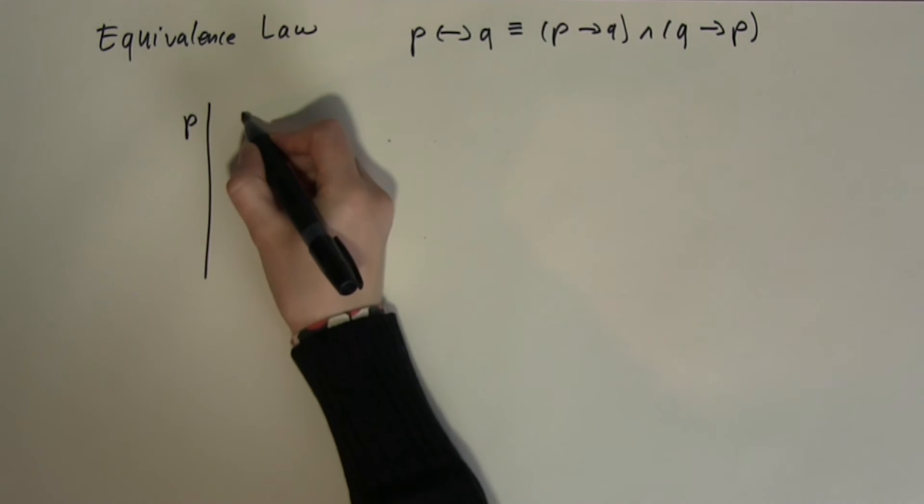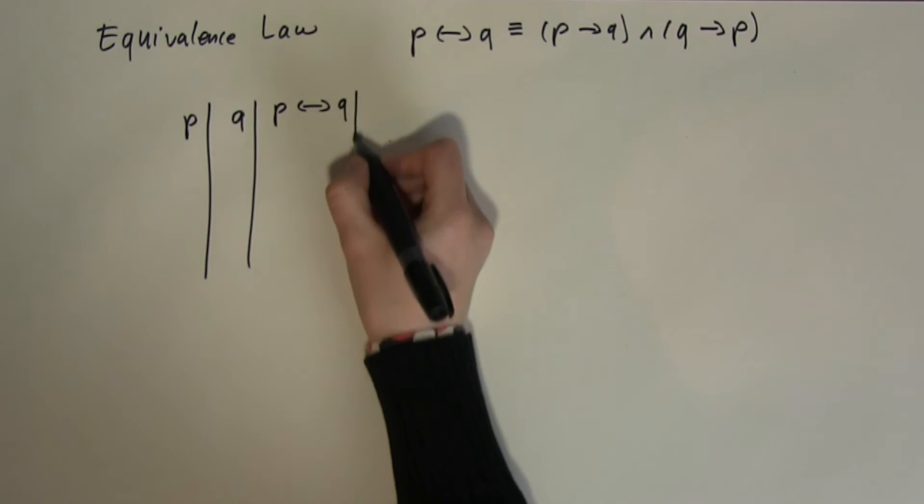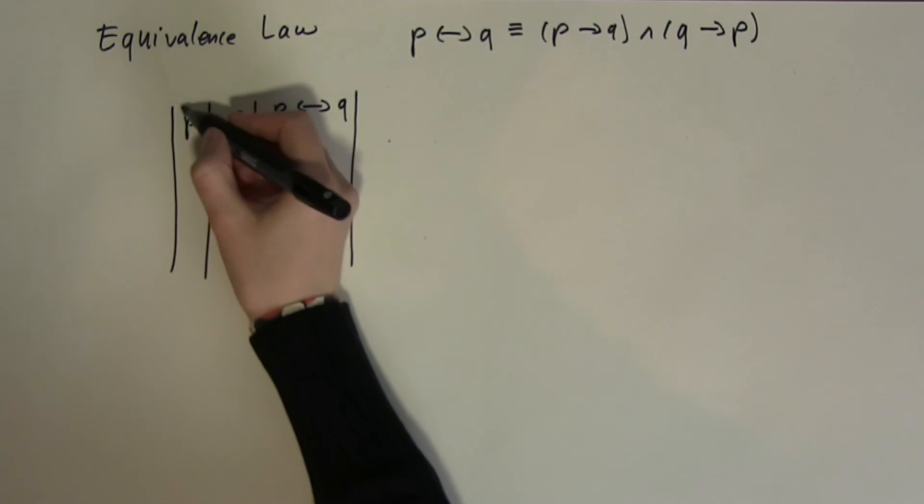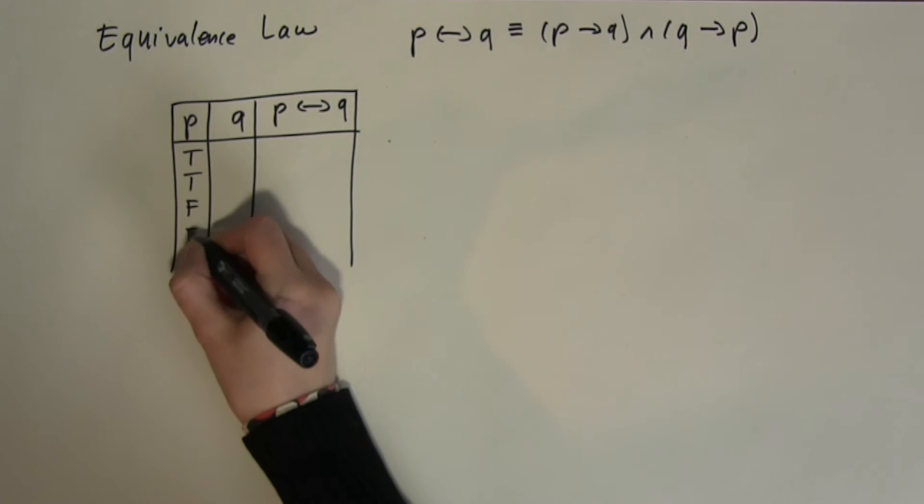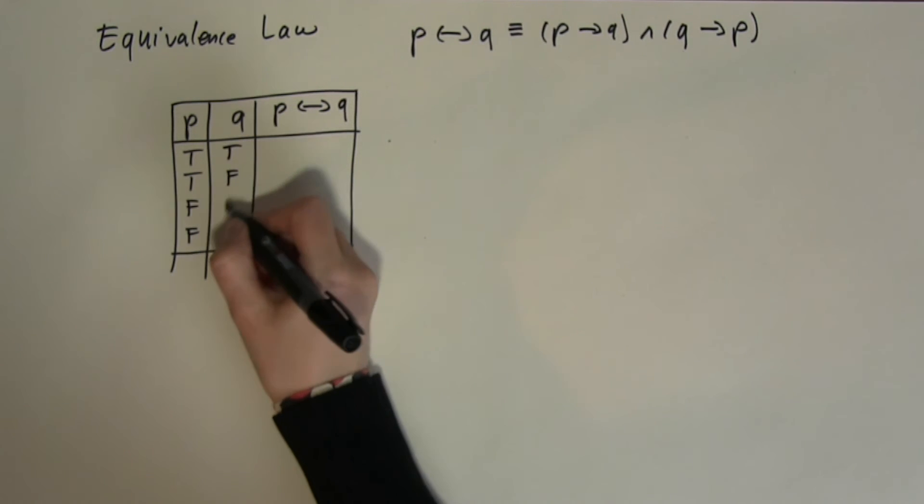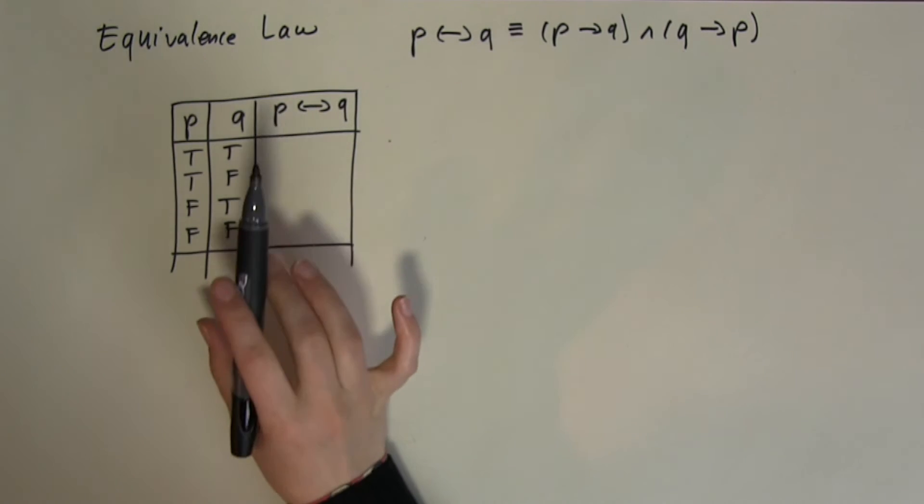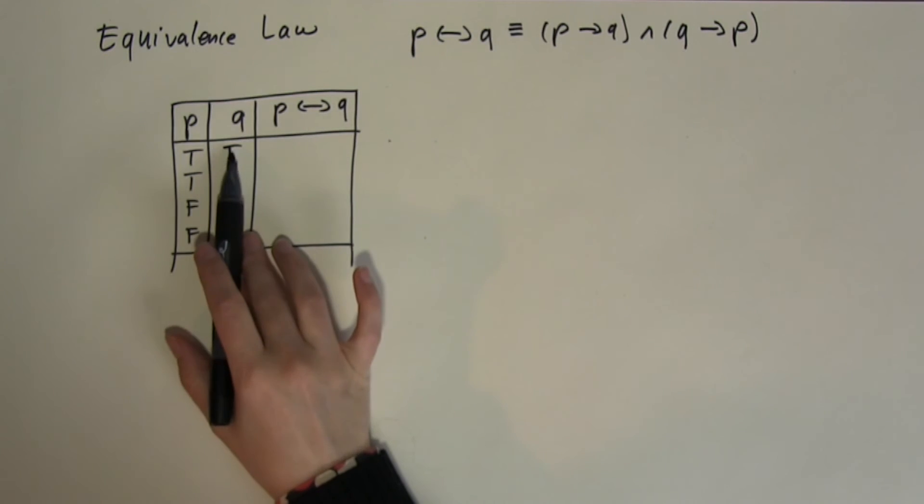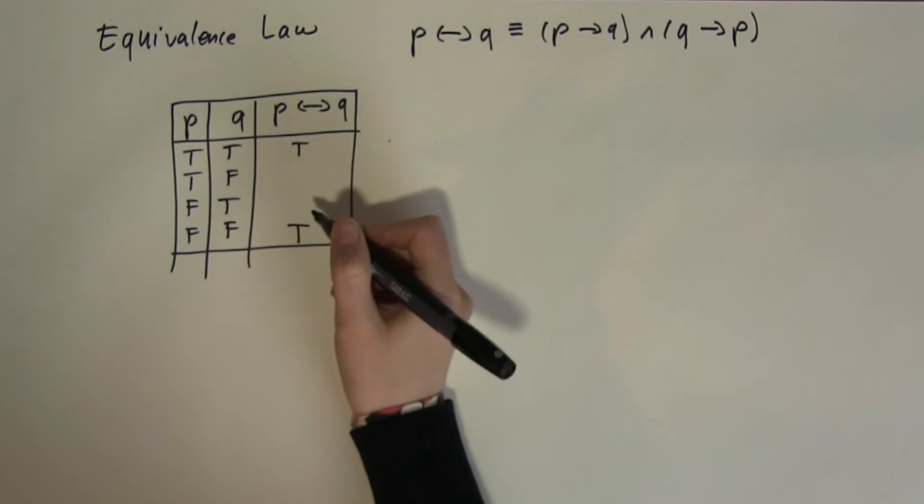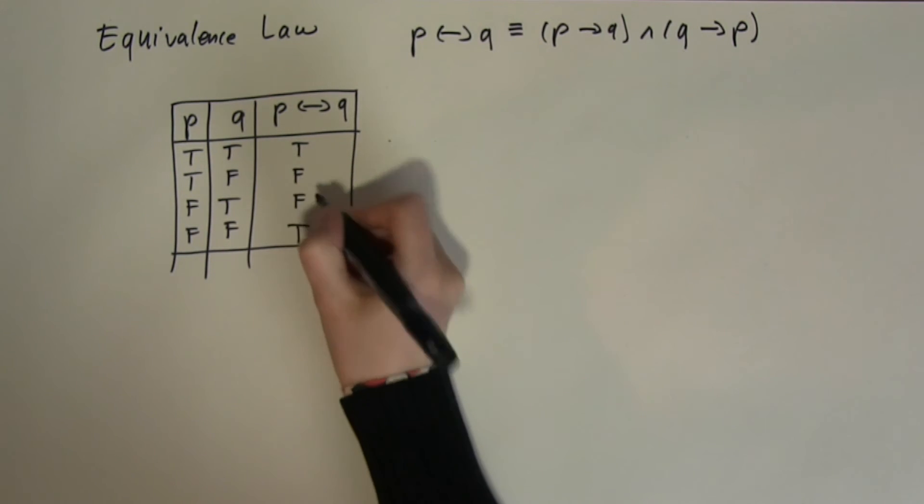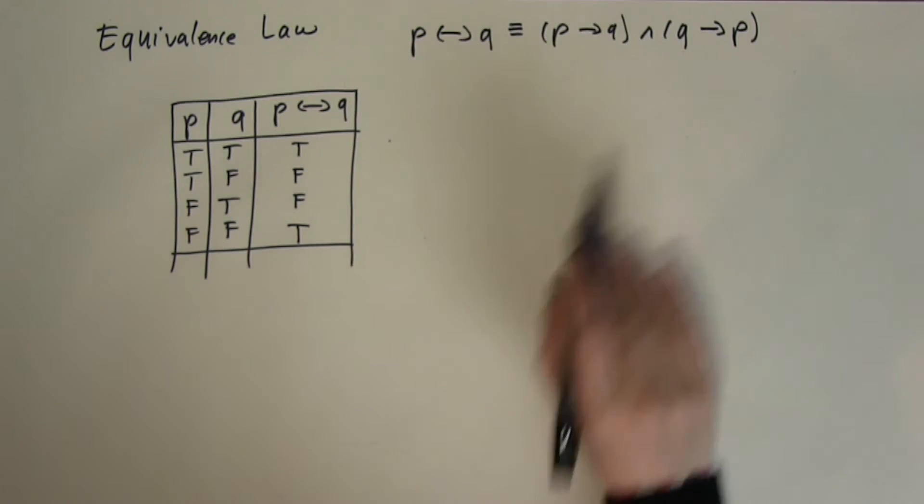So P, Q, P if and only if Q, true, true, false, false, true, false, true, false. Remember if and only if returns the truth value if the input values are the same, which is in the first and the last case. And returns a false value if the input values are different.